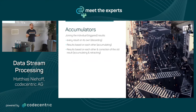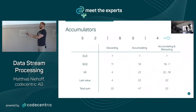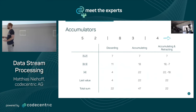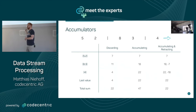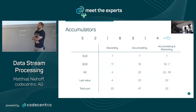There are three accumulator modes: discarding, accumulating, and accumulating and retracting. Discarding keeps only the delta result from each trigger firing — a stream of 5, 2, 8, 3, 4 gives results of 7, 11, and 4. Accumulating adds the new result to the previous — so 7, then 7+8=18, then 18+4=22. Accumulating and retracting does the same but also emits the old value so downstream systems can roll back. Which one to use depends on the downstream system.